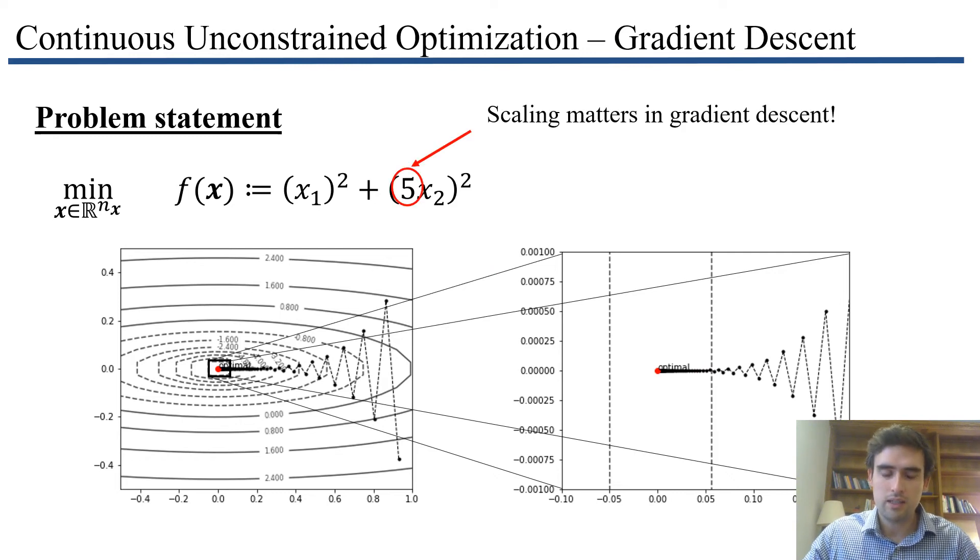This is happening because of this 5 here. My objective function changes much more rapidly with x2 than with x1 - 25 times more rapidly. If I change x2 by 1 unit, this represents a 25-fold increase in my function. If I change x1 by 1 unit, this increases by 1. My function is varying much more rapidly with x2 than x1. You can see in the contour plot the curvature of the ellipsoids - it varies much more rapidly in one direction than the other. This is what's making steepest descent have very bad performance.